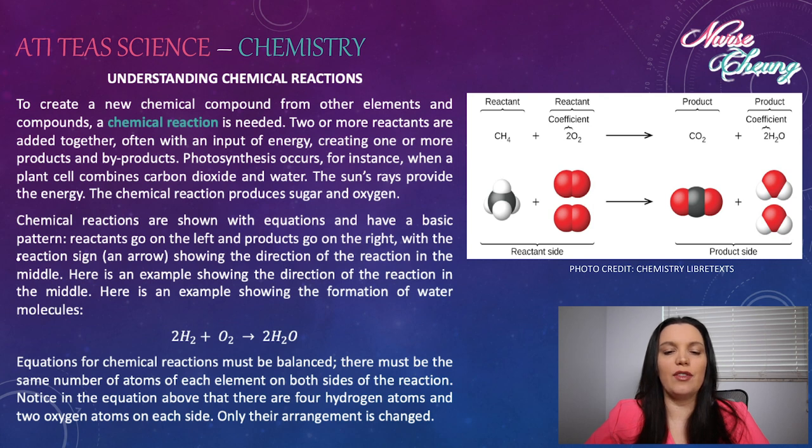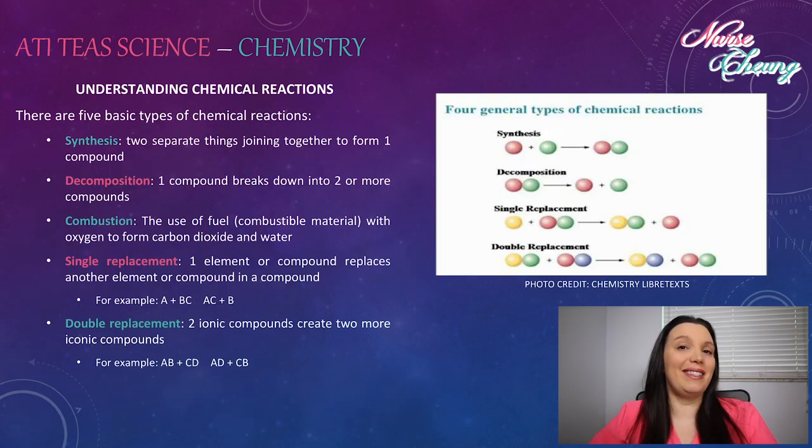To create a chemical compound from other elements and compounds, a chemical reaction is needed. Two or more reactants are added together often with the input of energy, creating one or more products or byproducts. Photosynthesis occurs, for instance, when a plant cell combines carbon dioxide and water. The sun's rays provide the energy. The chemical reaction produces sugar and oxygen. Chemical reactions are shown with equations and have a basic pattern. Reactants go on the left and products go on the right, with the reaction sign and arrow showing the direction of the reaction in the middle. Here is an example showing the formation of water: 2H2 plus O2 is equal to 2H2O. Equations for chemical reactions must be balanced. There must be the same number of atoms of each element on both sides of the reaction. Notice in the equation above that there are four hydrogen atoms and two oxygen atoms on each side. Only their arrangement is changed.